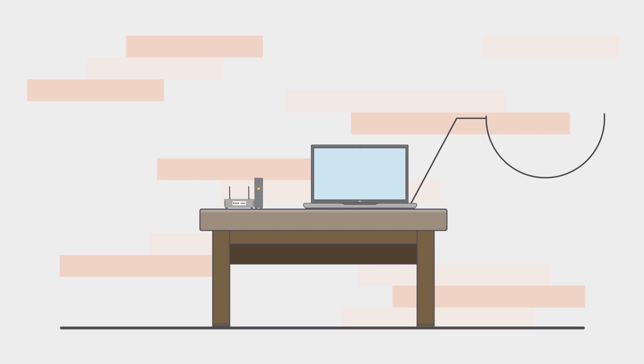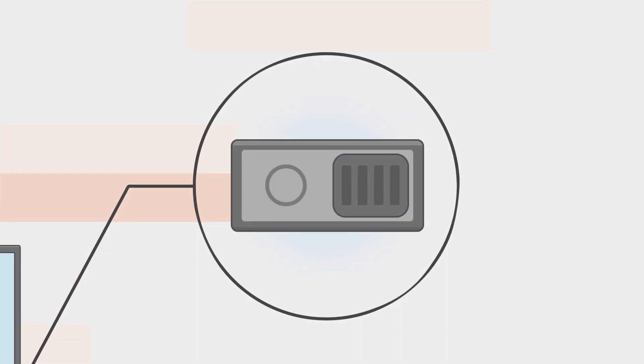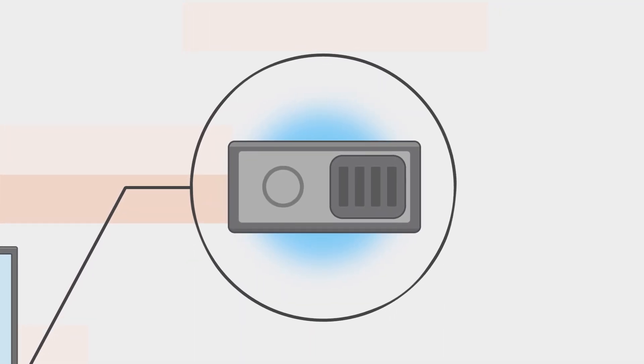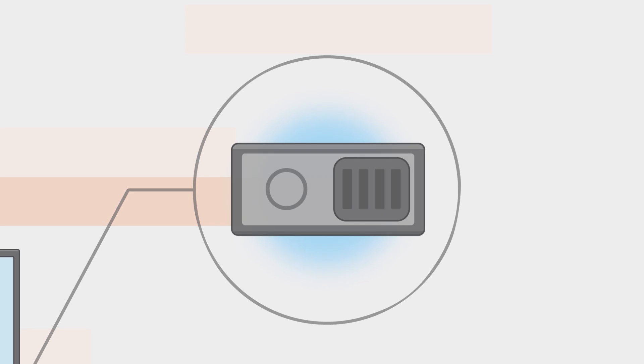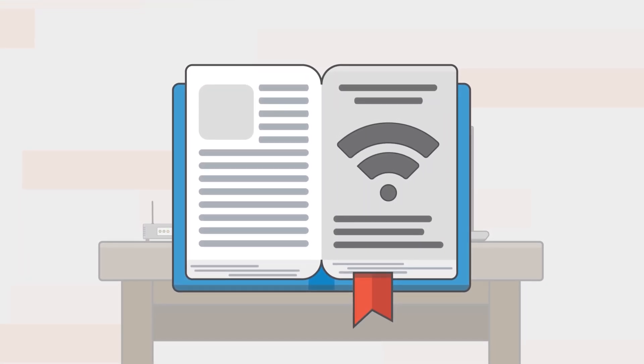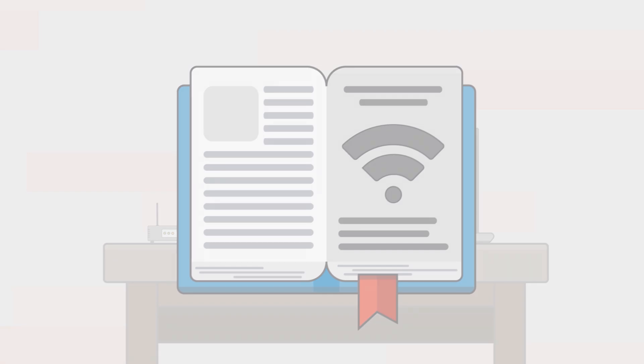Make sure the physical Wi-Fi switch on your laptop is turned on. Usually an indicator light will be illuminated when it is on. Refer to your user's guide if you are not sure where it's located.